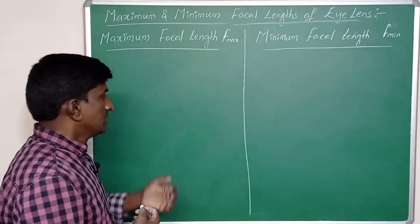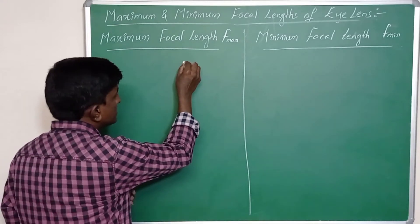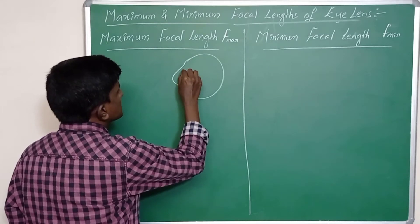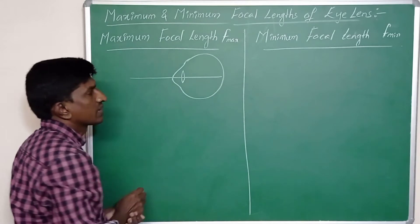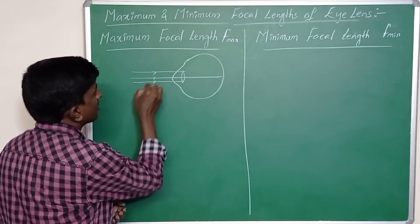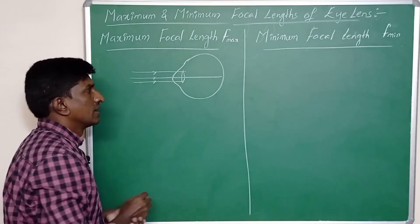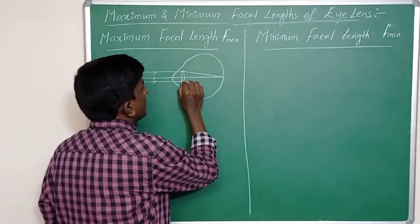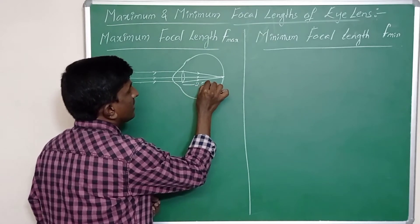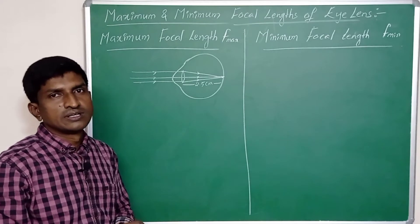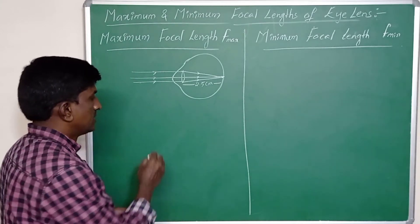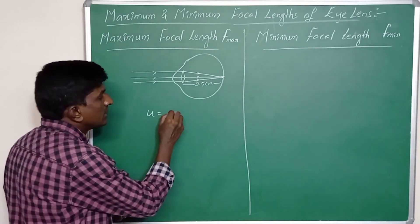Let's calculate the maximum focal length of the eye lens first. Whenever the object is at infinite distance, our eye lens gets maximum focal length. The eye lens and principal axis — as we know, if the object is at infinite distance, the light rays coming are parallel to the principal axis. They get refracted by the eye lens and form an image on the retina. The distance between the retina and eye lens is 2.5 centimeters, which is also the distance of the image. The distance of the object u is equal to infinite.